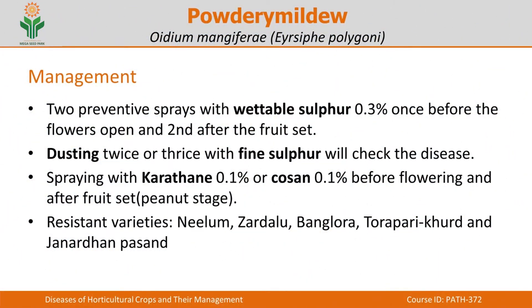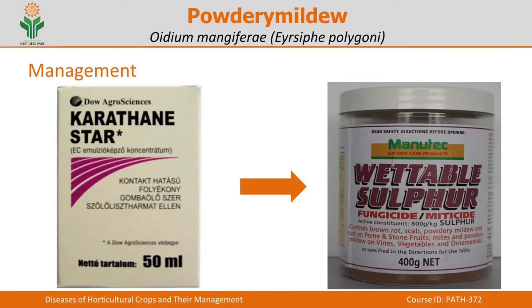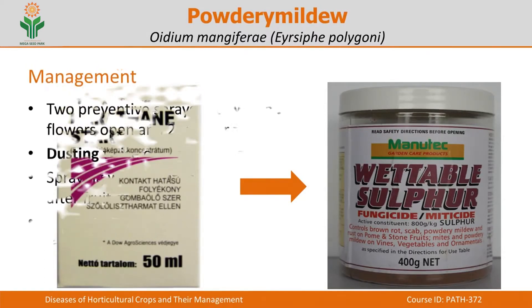To manage this disease, whenever you come across powdery mildew, remember that wettable sulfur serves as an excellent chemical. Two preventive sprays at 0.3 percent — first before the flowers open and second after fruit set — serve as an excellent remedy. Dusting with fine sulfur two or three times will also check the disease. Karathane or Calixin at 0.1 percent before flowering and after fruit set (at the peanut stage) also serves as excellent control.